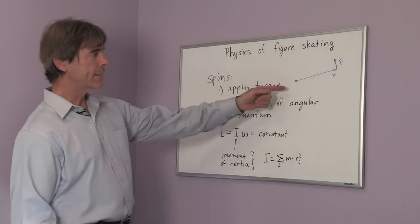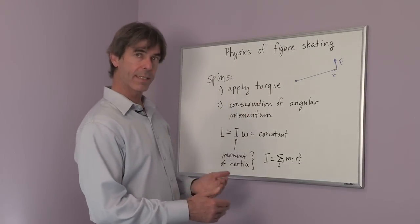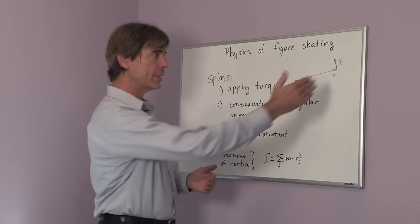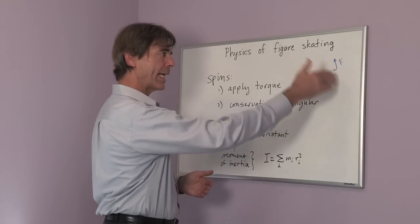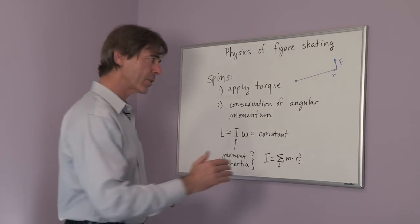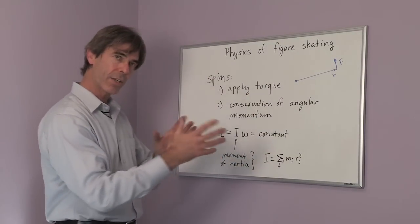The way a skater does this is to convert linear motion and start a circle. In other words, when they're skating, they move in a circle. That's applying a torque and they start their spin.